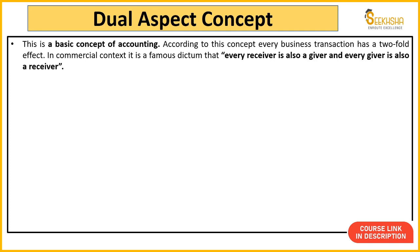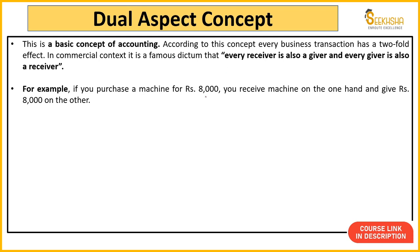Dual Aspect Concept kya kehta hai: har transaction ka effect double hoga. Every receiver is also a giver, and every giver is also a receiver — yeh ek famous dictum hai. Ek example se samjho: aapne 8000 rupay ki machine kharedi. Aapne 8000 rupay diye, toh aap giver ho. Aap machine ke receiver bhi ho. Jo aapka seller hai, woh 8000 rupay ka receiver hua aur machine ka giver hua. Double effect ho gaya.